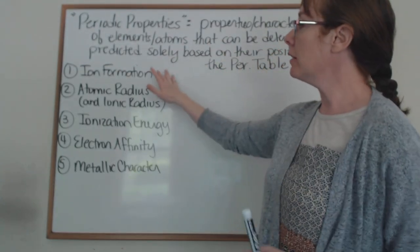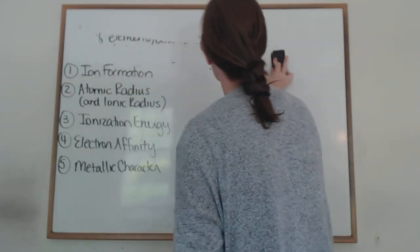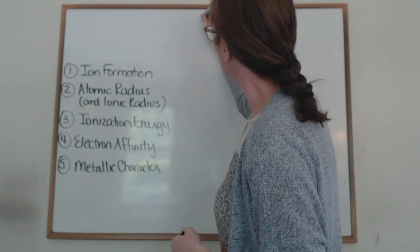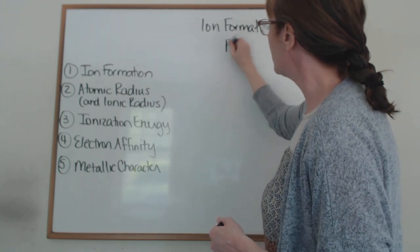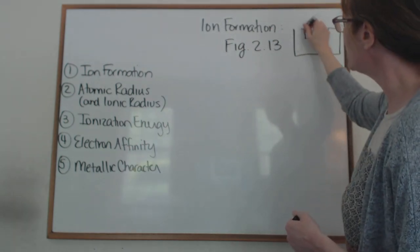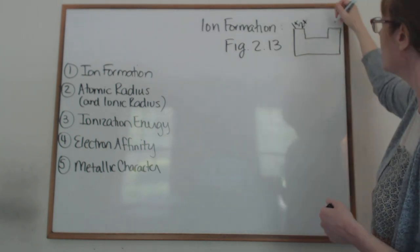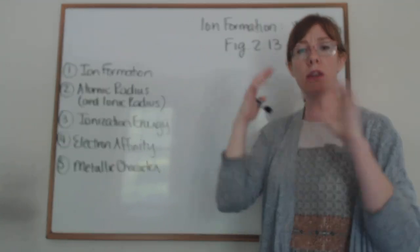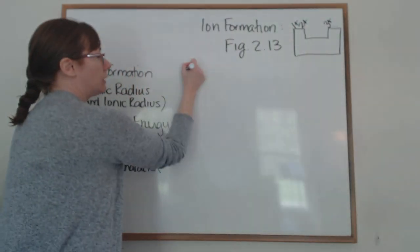Ion formation — we've actually been using this all semester. Atoms in group 1 form 1+ ions; group 2 forms 2+ ions; group 3 like aluminum forms 3+ ions; and over on the nonmetal side it's 1-, 2-, 3- as you walk across. We've been using this periodic trend all semester long.